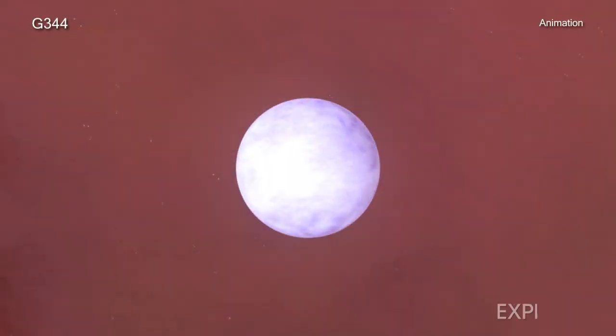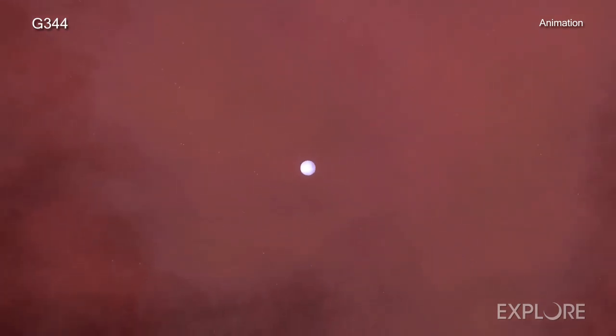White dwarfs are among the most stable of stars. They are stars that have exhausted most of their nuclear fuel and shrunk to about the size of Earth, yet still contain about the same mass as the Sun.